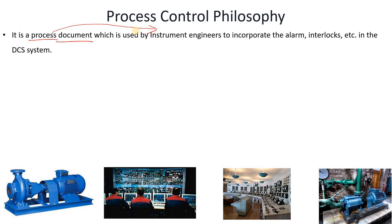For example, as a process engineer you have prepared a P&ID with a pump. You have provided two interlocks: first, if the tank level goes low-low, the pump should be tripped; second, if the discharge pressure of the pump goes high-high, the pump should also be tripped.